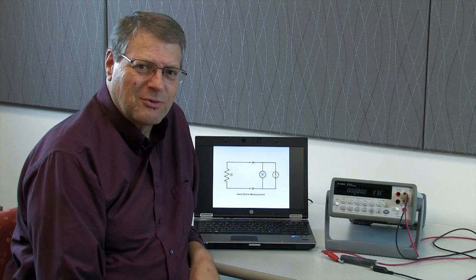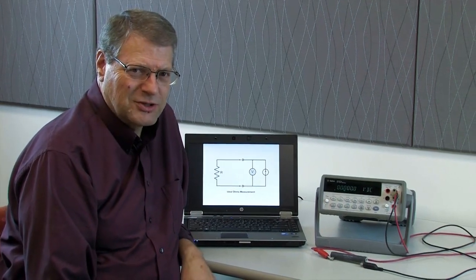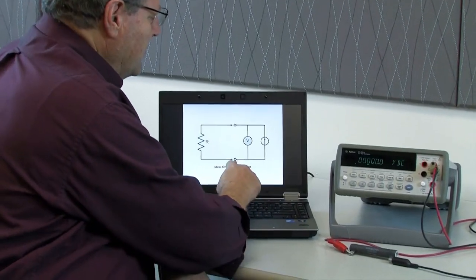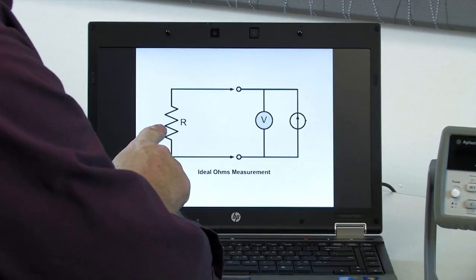But first let me show you what virtually every multimeter in the world does to measure resistance just using two leads. If you look at the circuit I have here on the computer, this side represents the multimeter and here's our unknown resistance.